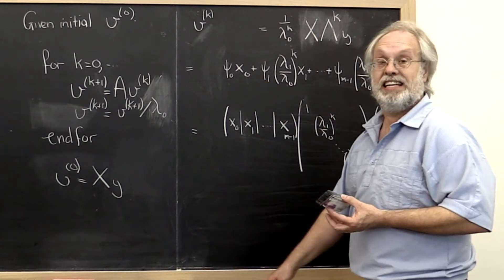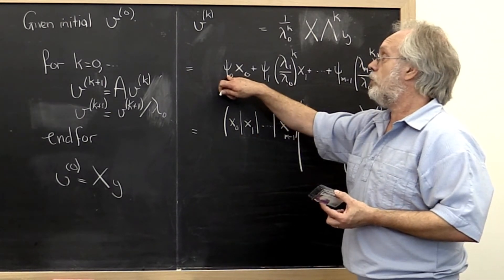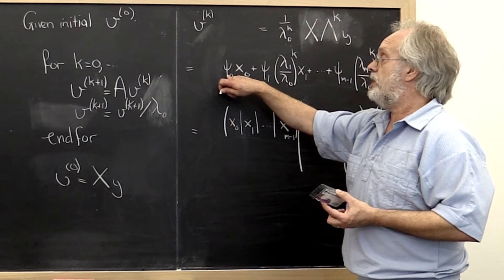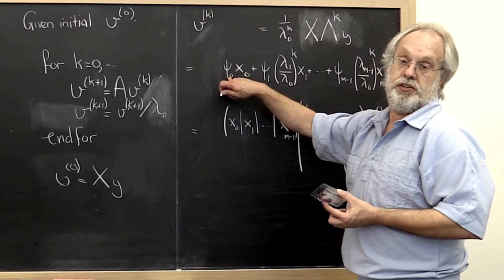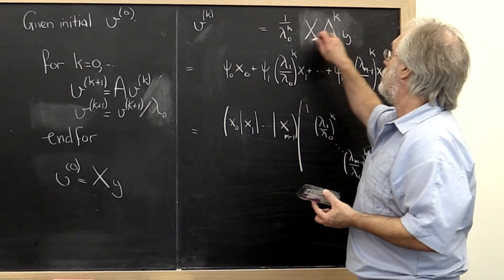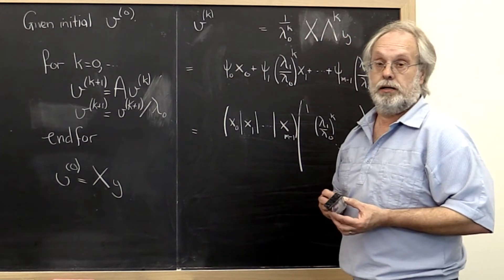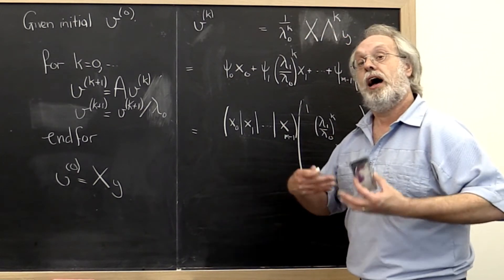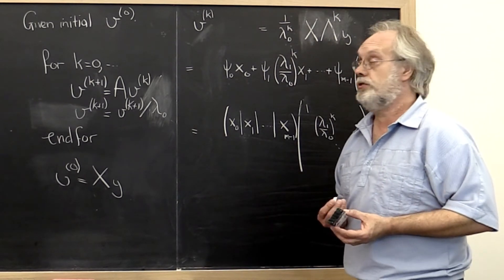In other words, in the direction of x0, except the vector that we'll compute will be scaled by the coefficient, the first coefficient of our vector y. So this now allows us to see how fast we actually converge to that.